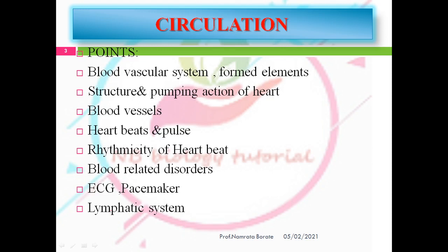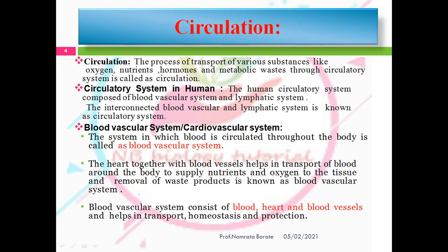In this video we consider the first point: the blood vascular system. Circulation means the process of transport of various substances like oxygen, nutrients, hormones, and metabolic waste through the circulatory system. The human circulatory system is composed of two parts: the blood vascular system and the lymphatic system.